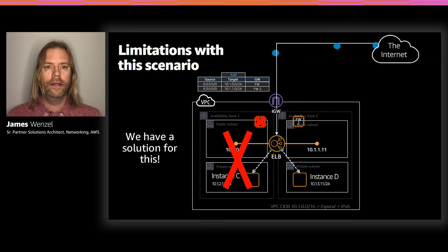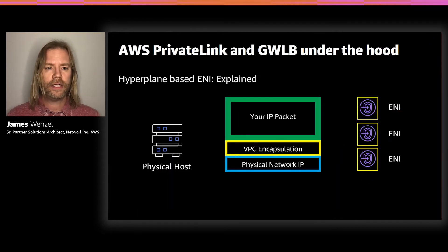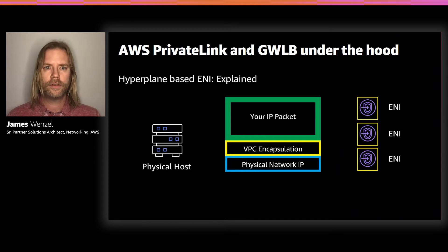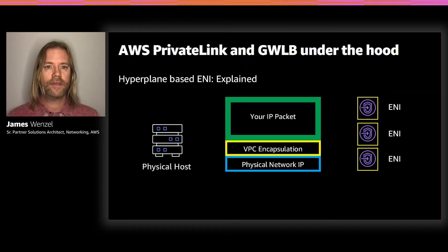Luckily, we have a way around this. Before we get into any more architectures, I need to talk about a basic building block — ENI-based services. ENI stands for Elastic Network Interface, and we're going to talk specifically about Gateway Load Balancer and AWS PrivateLink. Both use hyperplane-based ENIs. We have physical machines distributed all over the world in every region and AZ. All the layer-two framing is handled for you, and we encapsulate everything at the VPC level with our hyperplane — a construct that enables large-scale, scalable, and secure communications for anything in AWS. Your packets ride on top of that encapsulation instead of dealing with anything on the physical realm.